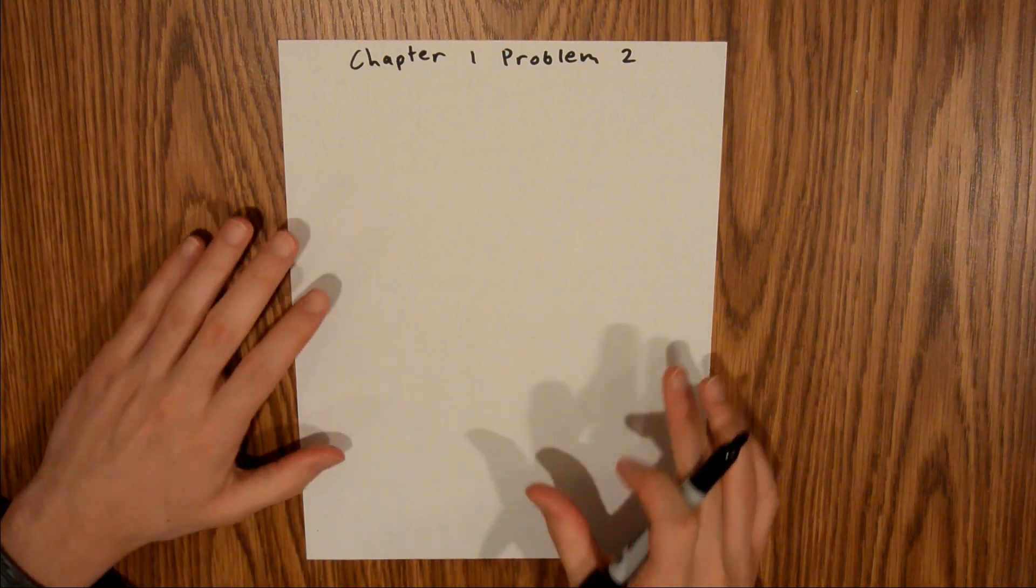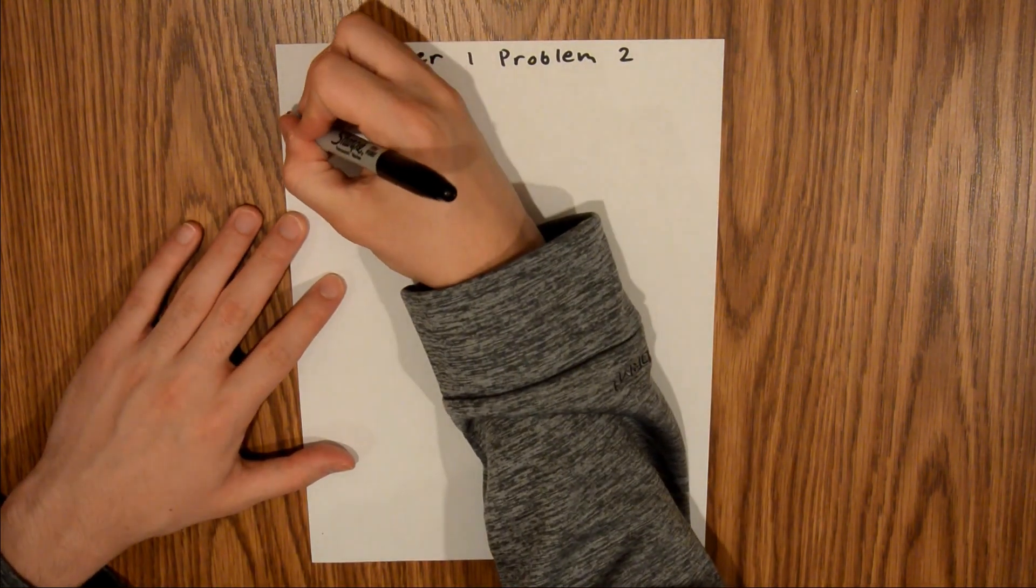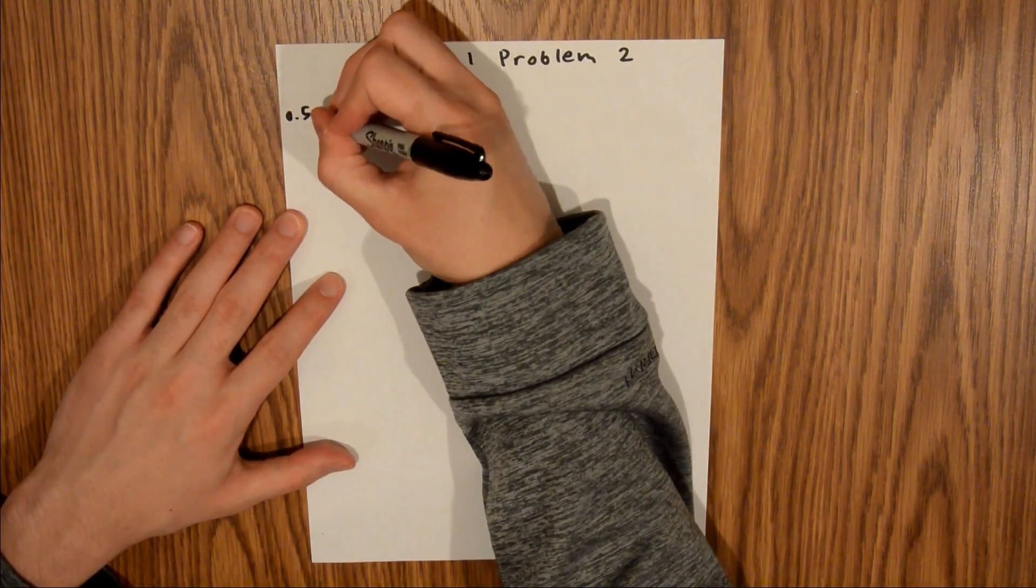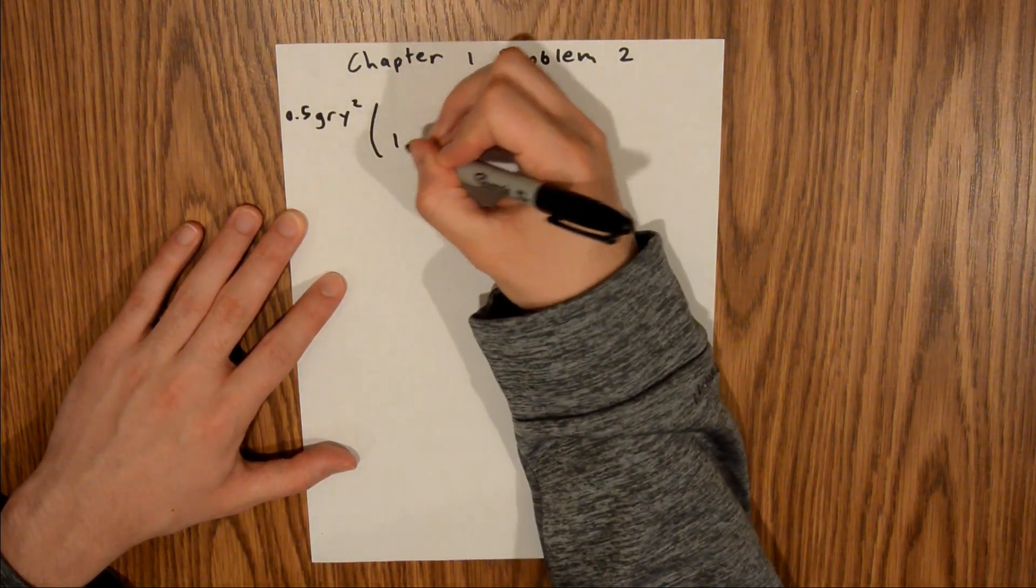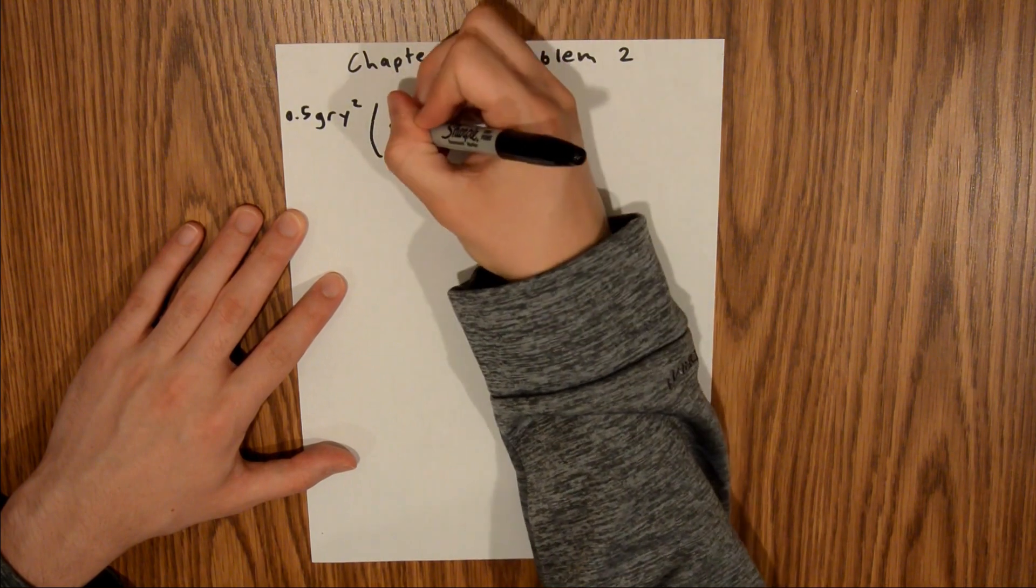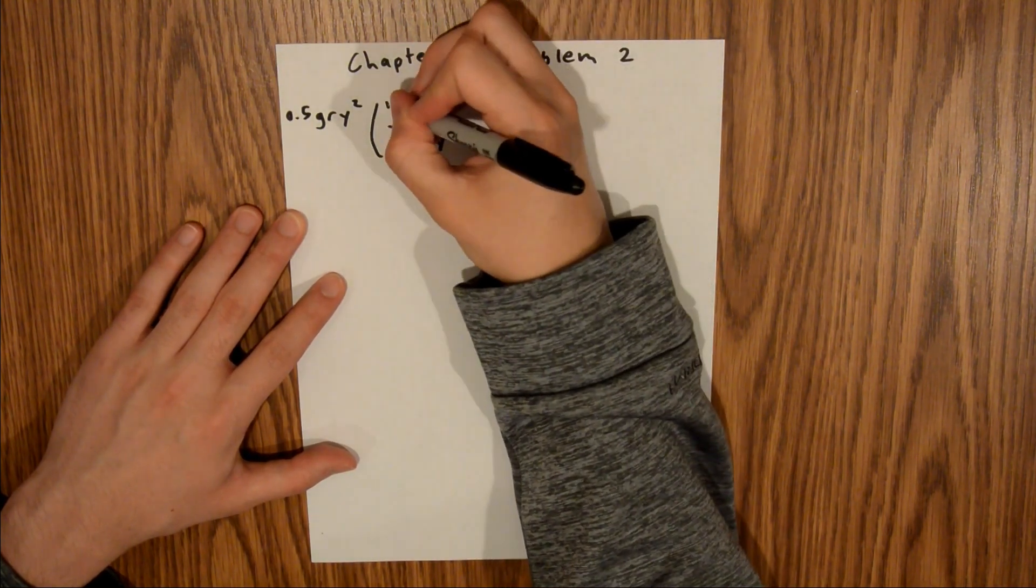We are asked to convert half of a GRI squared, and we are told that one GRI is one-tenth of a line.